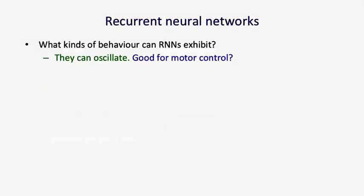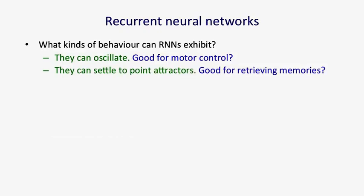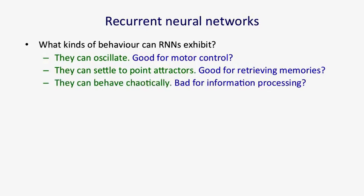So what kinds of behavior can recurrent neural networks exhibit? Well, they can oscillate. That's obviously good for things like motor control, where when you're walking, for example, you want a nice regular oscillation, which is your stride. They can settle to point attractors. That might be good for retrieving memories. And later on in the course, we'll look at Hopfield nets, where they use the settling to point attractors to store memories. So the idea is you have a sort of rough idea of what you're trying to retrieve. You then let the system settle down to a stable point, and those stable points correspond to the things you know about, and so by settling to that stable point, you retrieve a memory.